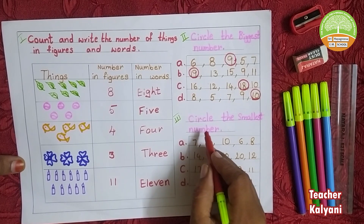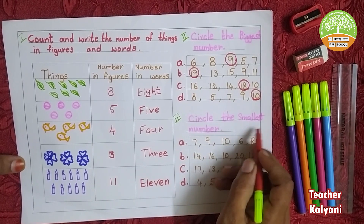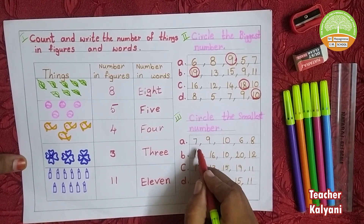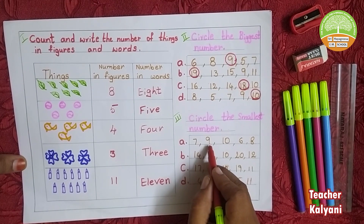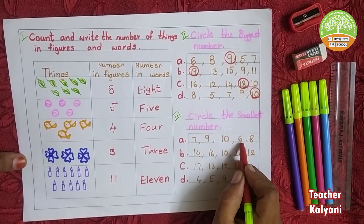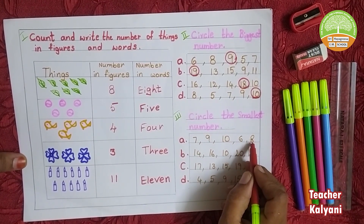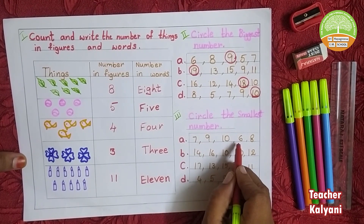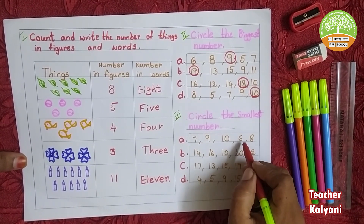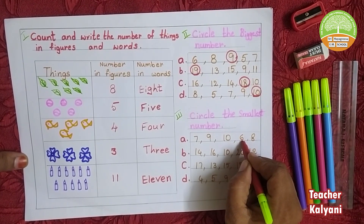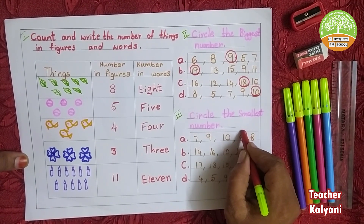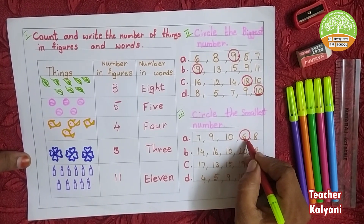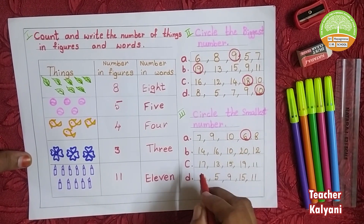Next one: circle the smallest number. 7, 9, 10, 6, 8. Which is the smallest number in this box? 6 is the smallest number.